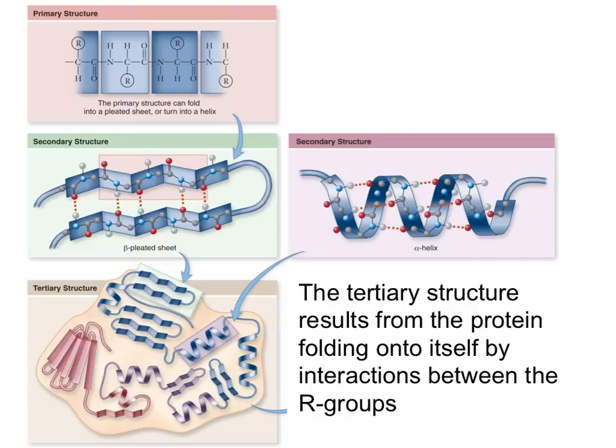And then after the secondary structure is folded, the most complex form of the protein folding is the tertiary structure. So this protein goes through several foldings. It's like kneading a sweater.